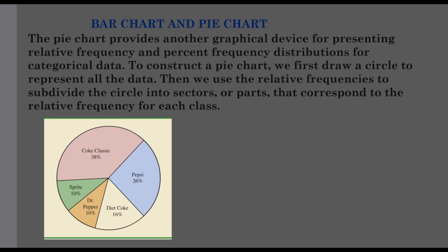This is a pie chart. A pie chart provides another graphical device for presenting relative frequency and percent frequency distributions for categorical data. We draw a circle to represent all the data — the full data is a circle of 360 degrees. This is the base of our frequency, close to each class. Pepsi is 26%, Sprite 10%, Dr. Pepper 10%. We are dividing the first 100 to represent the percent frequency. This is the pie chart.